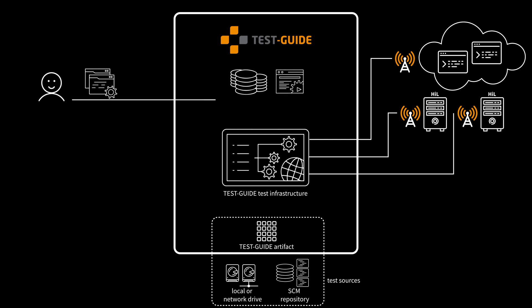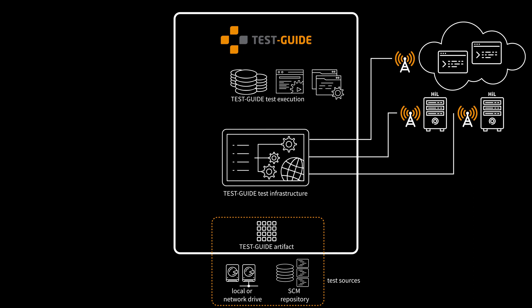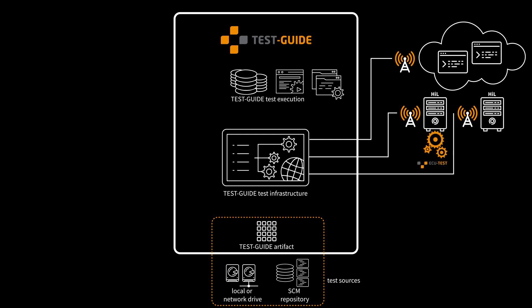We now can upload test execution tasks to the Test Guide test execution. The execution task has requirements to the test resources. These requirements describe in an abstract way what the test resource needs to fulfill to be able to execute the task. Based on the requirements, an uploaded execution task first computes its matching test resources based on the information of the Test Guide test infrastructure. If a test resource is free, it fetches the execution task with the highest priority. It downloads the test source to the test resource and then executes the test via ECU Test. When the test was executed completely, the execution task state is updated in the Test Guide test execution and the test result is uploaded to the Test Guide test report management.